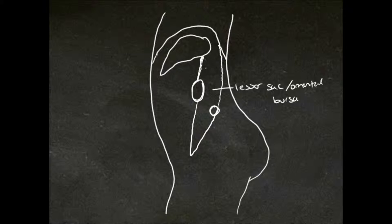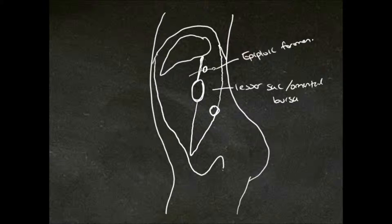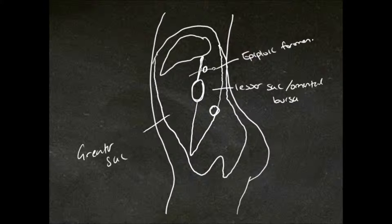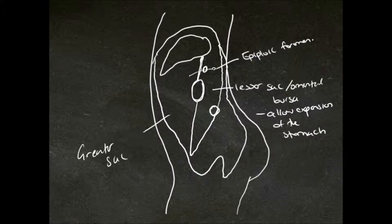Here at the free edge of the lesser omentum is a passageway and this is called the epiploic foramen. The rest of the peritoneal cavity is known as the greater sac. The purpose of the lesser sac is to allow expansion of the stomach. The epiploic foramen allows for connection of the greater sac and the lesser sac.